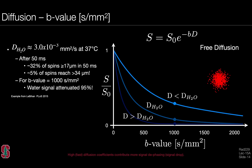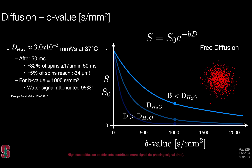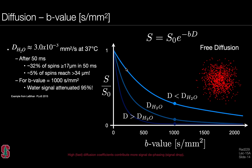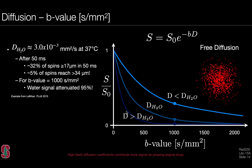Different signal attenuation curves arise for different diffusion coefficients. If the diffusion coefficient is lower than that of water — representing slow diffusion — there is less signal attenuation as a function of B value. Conversely, diffusion coefficients higher than water result in steeper signal attenuation. In practice, biological tissues typically have diffusion coefficients at or below that of water, since cellular barriers restrict diffusion.